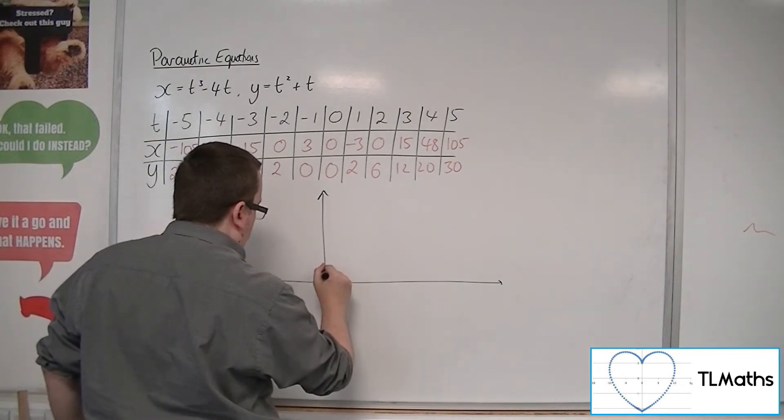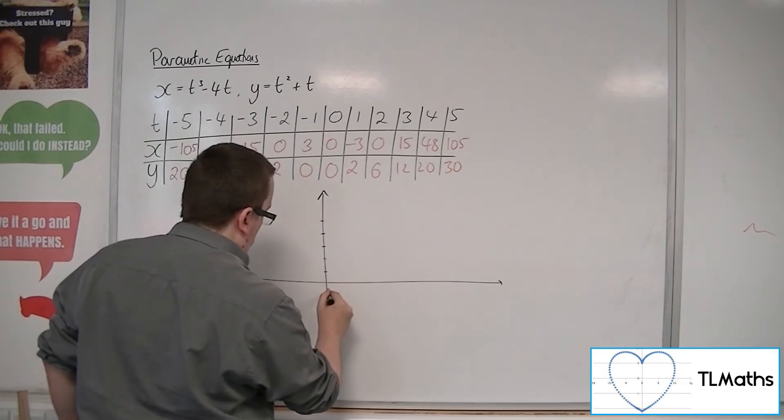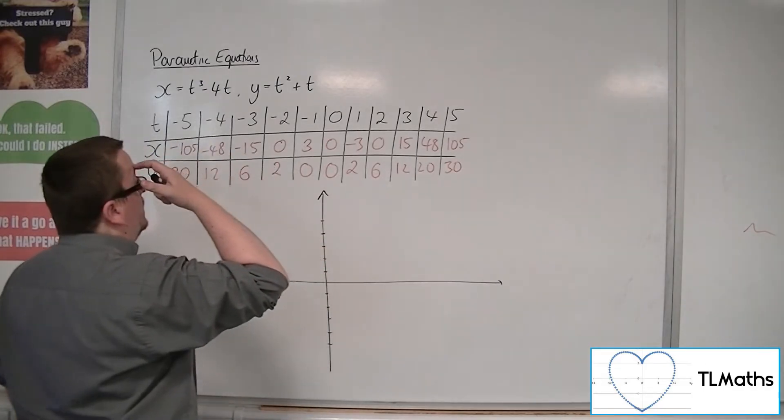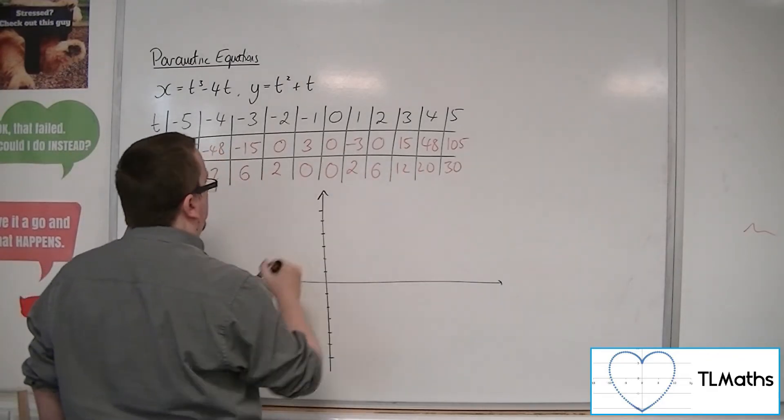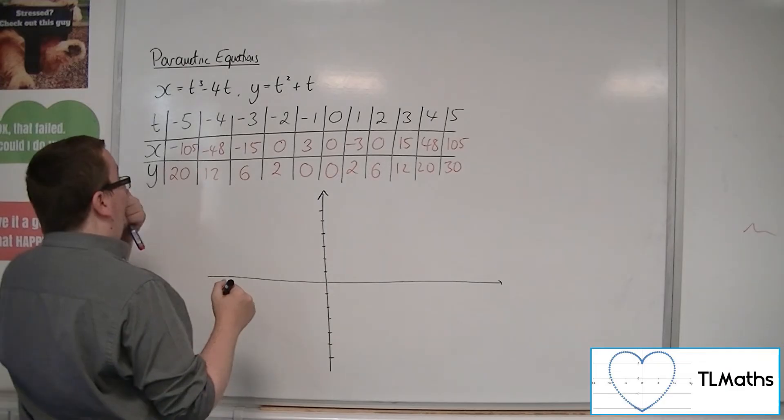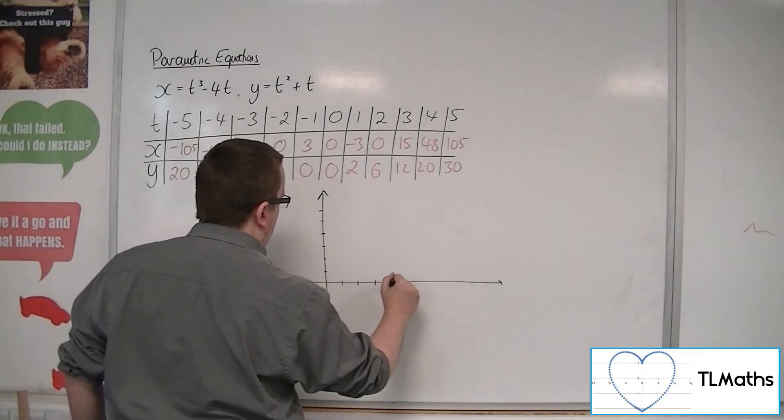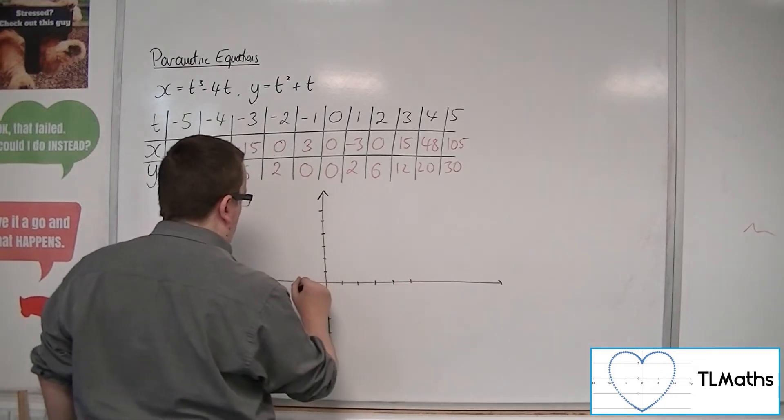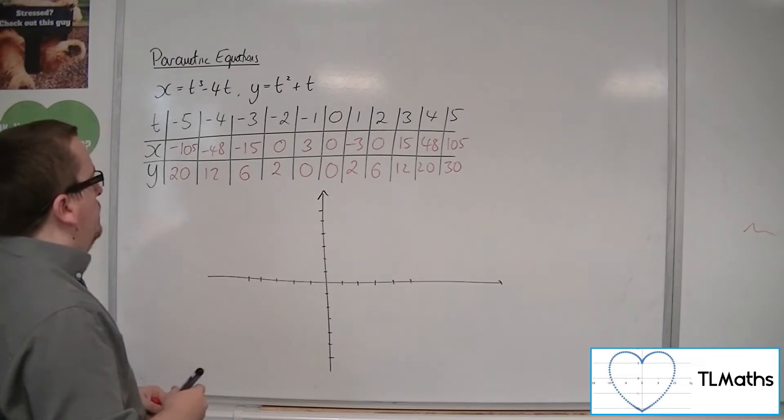So let's go 1, 2, 3, 4, 5. 1, 2, 3, 4, 5. Going up to about 6 there, actually. So 6, 6, and 1, 2, 3, 4, 5. 1, 2, 3, 4, 5.